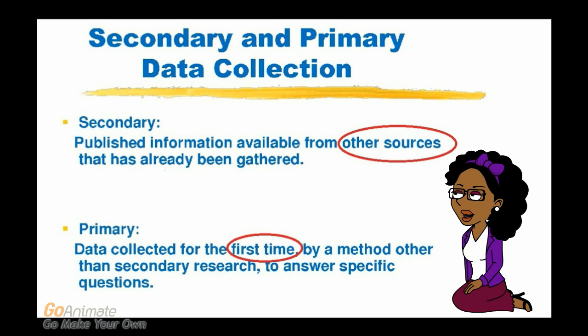Data that is originally collected by the researcher is called primary data. In short, secondary data is data from other sources that has already been generated, while primary data is data collected for the first time.